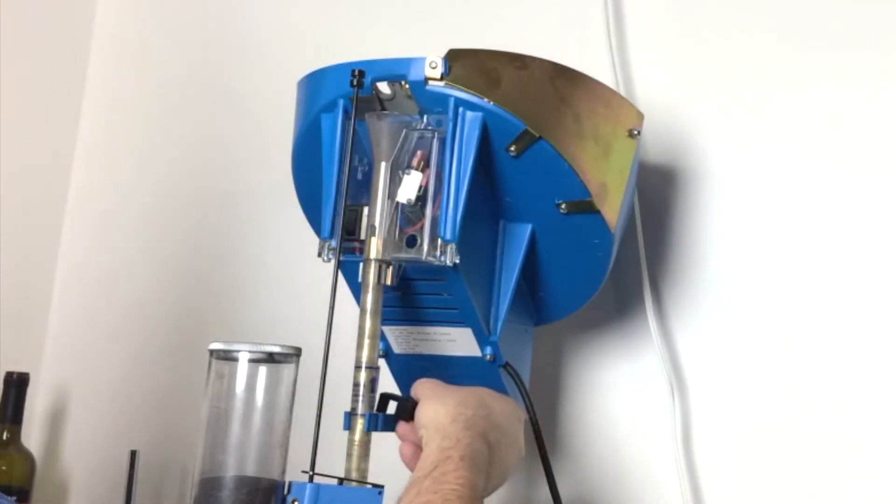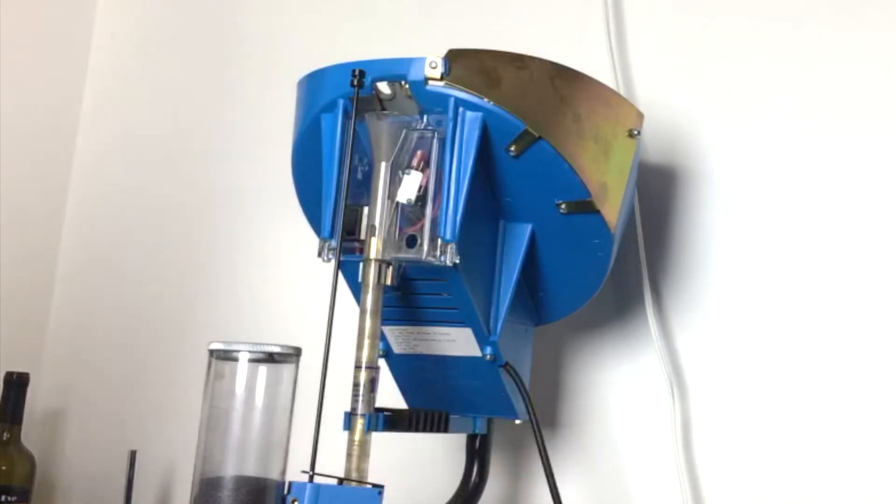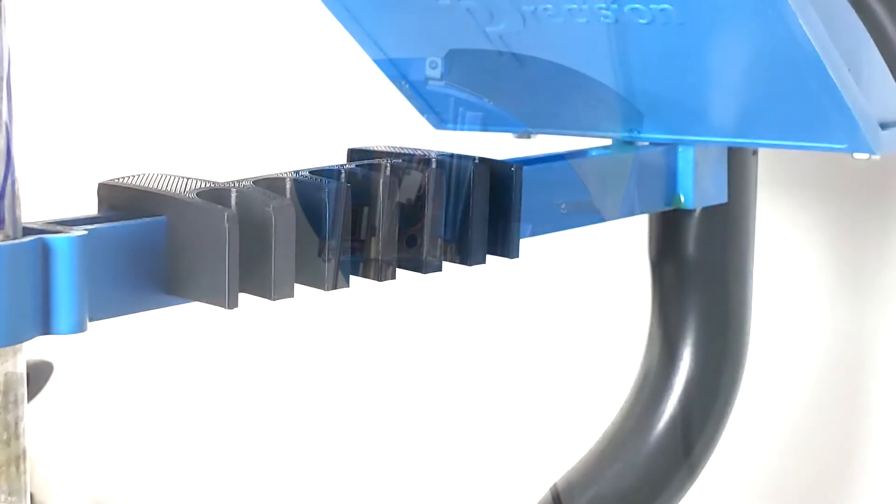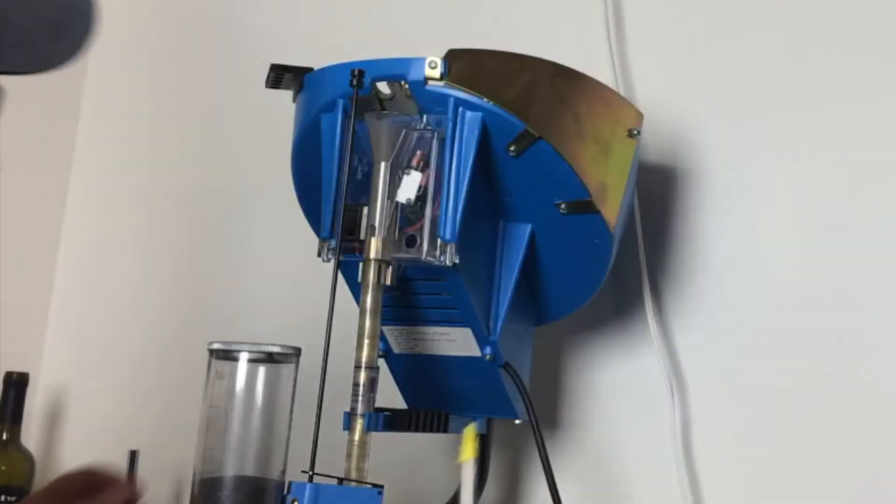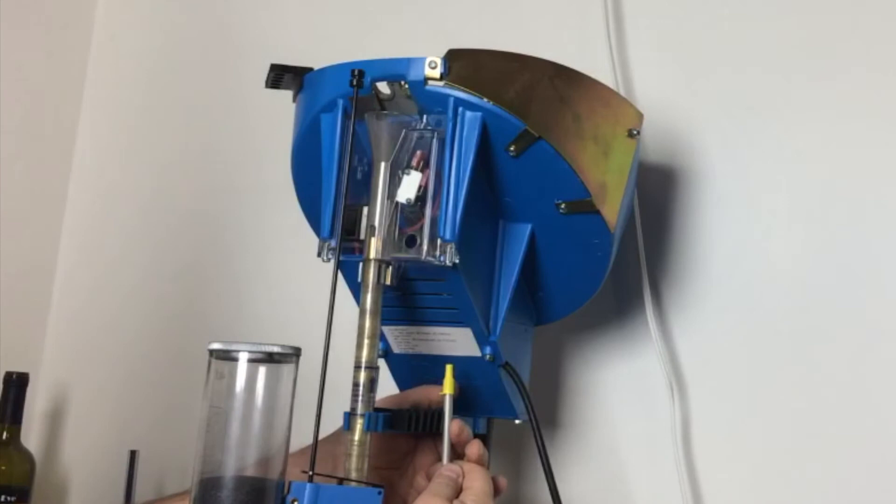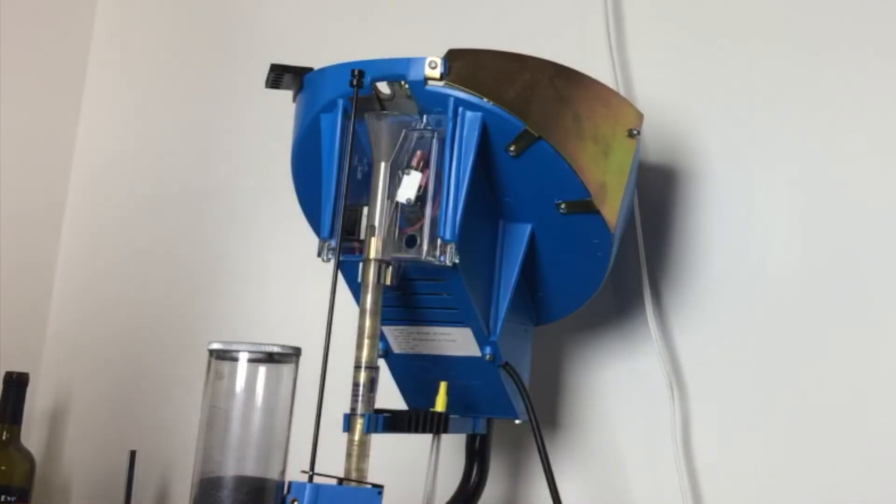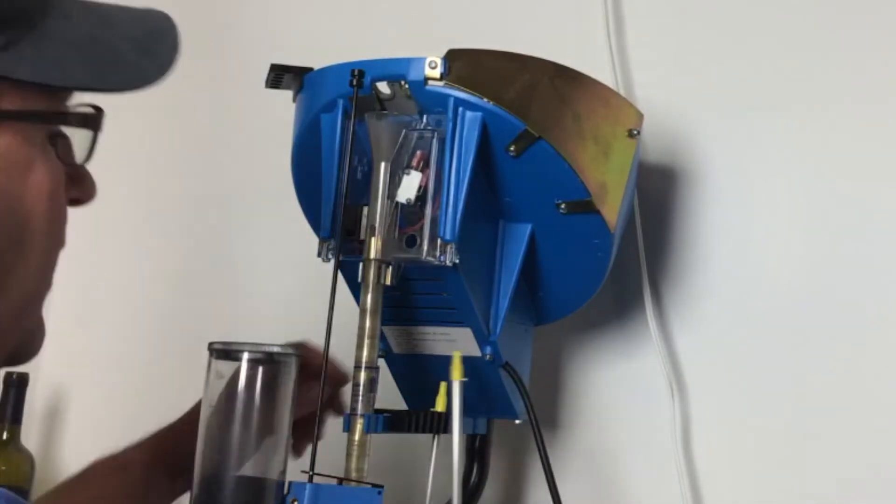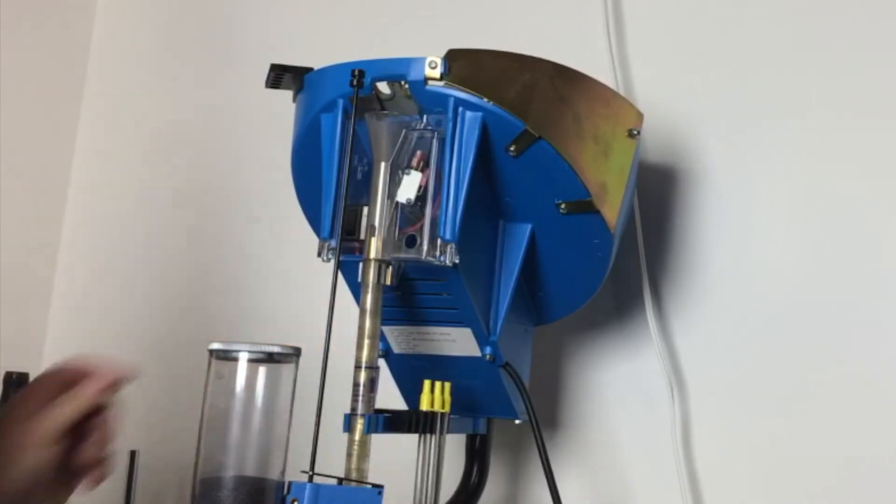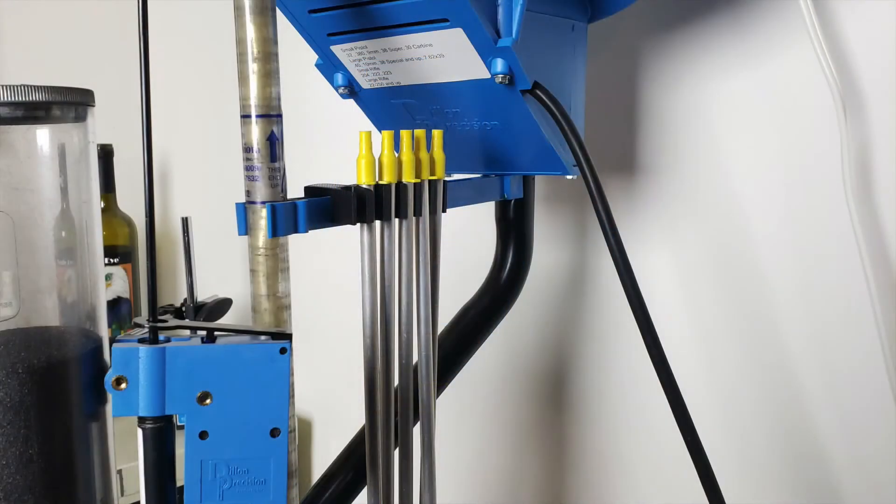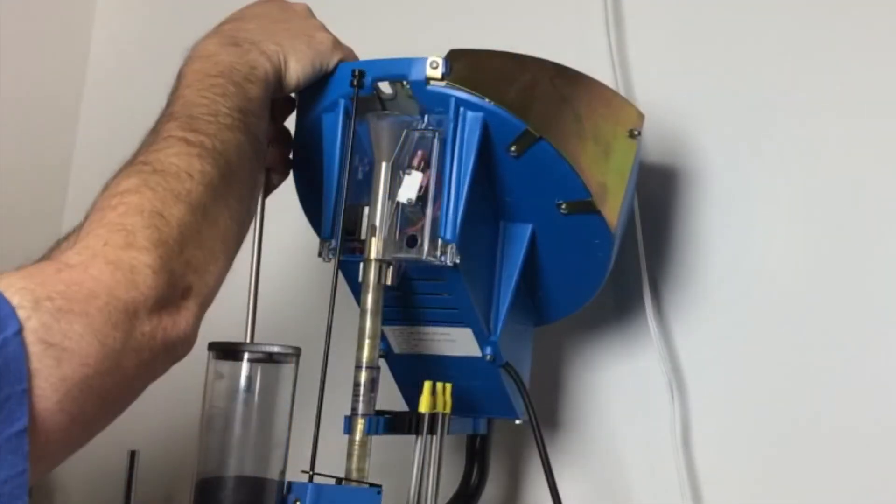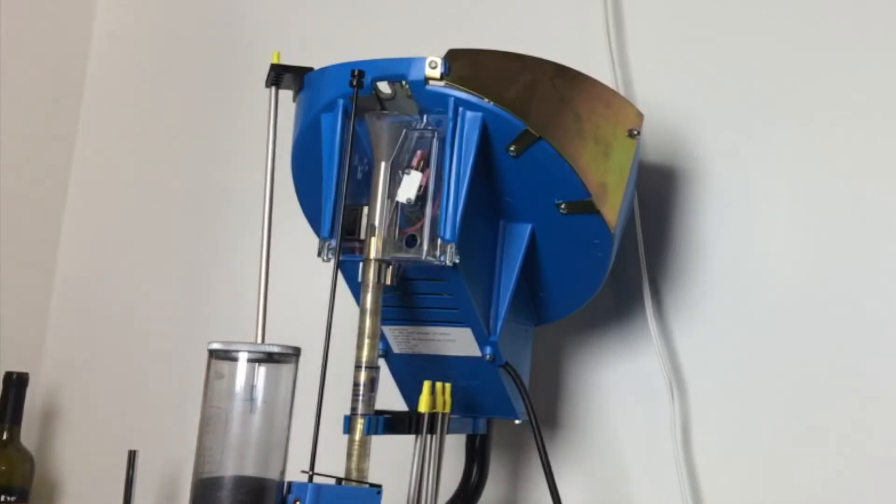I then attach FunctionalDIYer's tube holder to the crossmember. I used the crossmember tube holder for my live primer tubes. And I used the shell feeder holder for my empties.